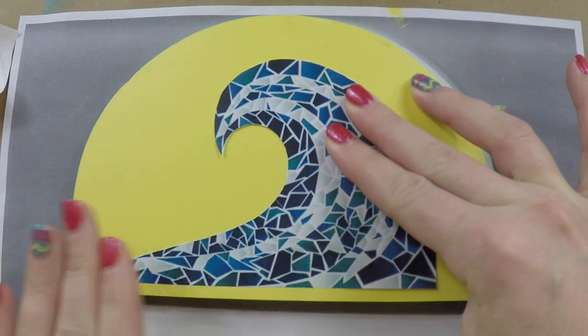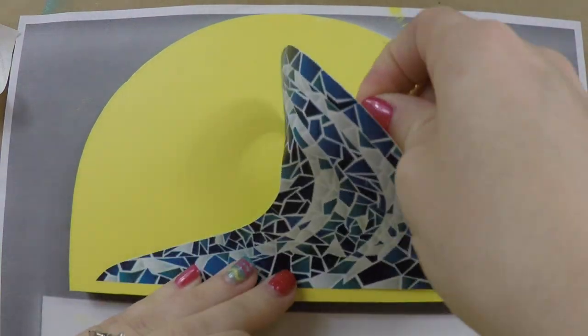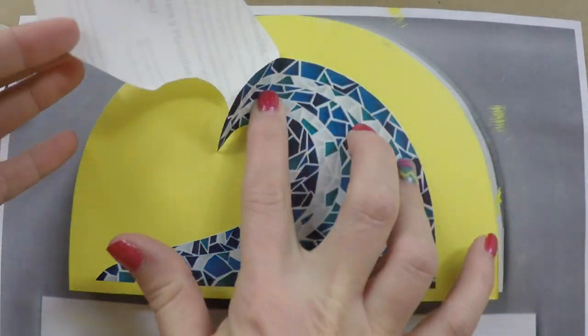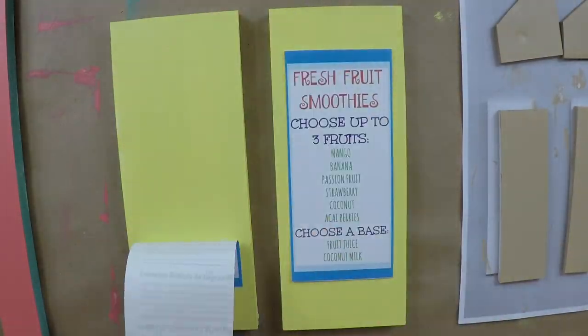Now I printed them out on sticky paper, that way it will just stick to the foam board. If you don't have sticker paper, you can print it out on regular paper and just glue it on.